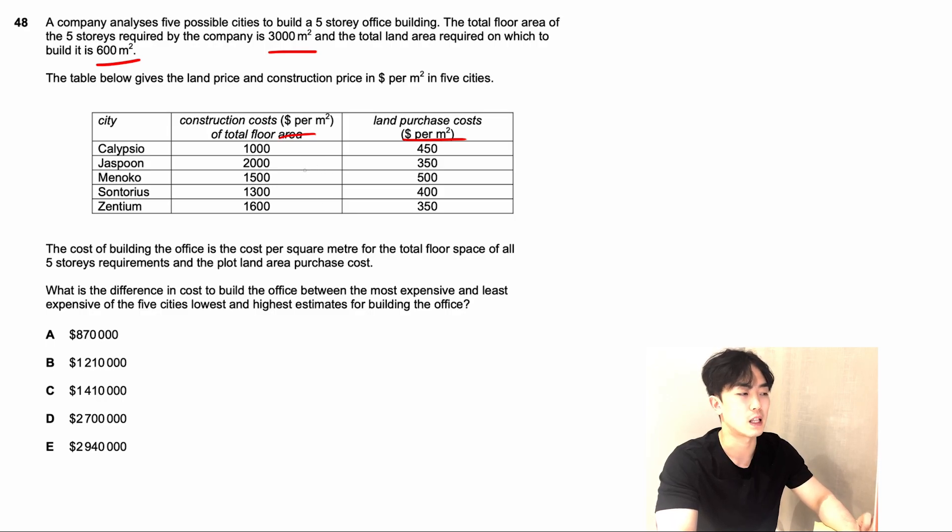Because you don't have too much time in the TSA, it's very unlikely that you should work out the price for each different city. That's going to take too long. We try to find a shortcut. Things to identify: the total floor area is 3,000 meters squared, whereas the total land area is only 600 meters squared, meaning that the floor area will influence a lot more of the total price we need to pay to build it. So we can just look at the total construction costs for the total floor area. You can see here that Jaspern is $2,000 per meter squared. The differences in the land purchase costs are different, but it's not going to affect the total price at the end of the whole construction.